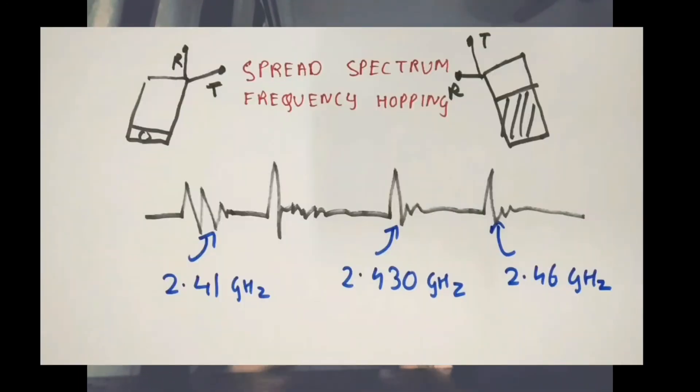Data transfer works on a spectrum spreading, frequency hopping technique. The frequency hops from 2.41 gigahertz to 2.485 gigahertz. Bluetooth sends data in really small parts, so even in a crowded area, files are not interrupted while sending.